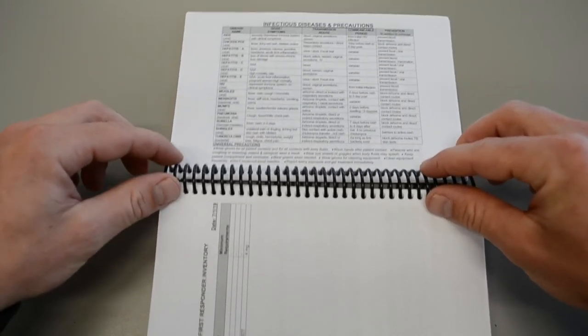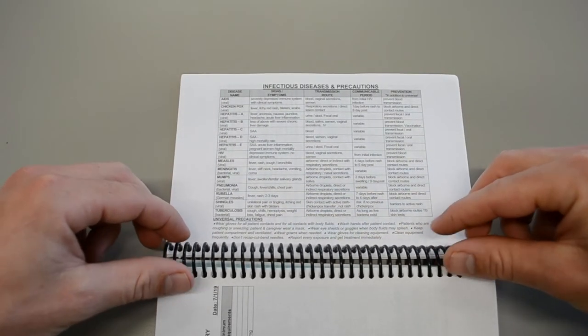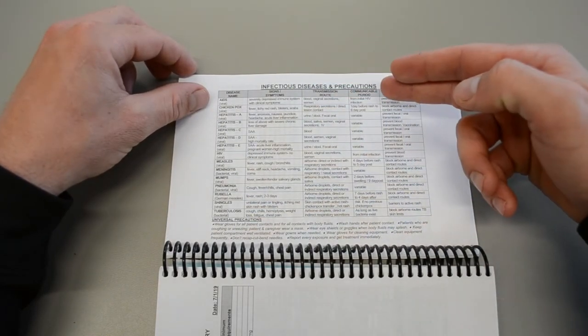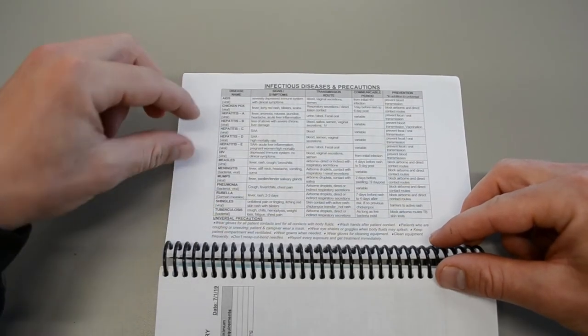Infectious diseases and precautions. I suspect we'll be seeing an update to this after this COVID. But it tells you signs and symptoms, transmission route, communicable period and prevention as well as the disease type. Universal precautions.